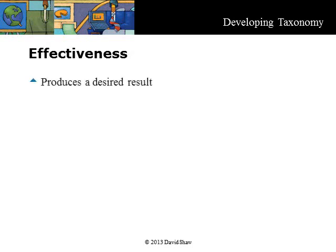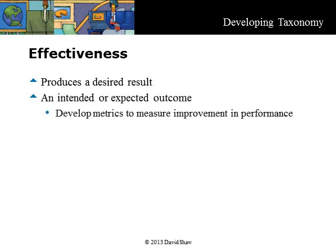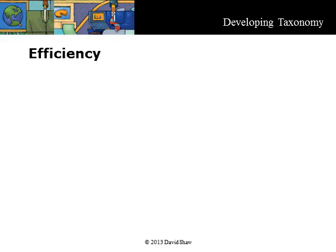Effectiveness is the capability of producing a desired result. When something is deemed effective, it means it has an intended or expected outcome. Effectiveness is actively measured by task completion rates and other test metrics. For example, you could measure the time to search and find specific documents before and after your taxonomy project. Efficiency is the extent to which time, effort, or cost is well used for the intended task or purpose. Efficiency is a measure of how well a taxonomy does what it should do — can we search and find the right information quickly, using very simple methods? The Web 3-Click Rule is an example of an objective efficiency measure.